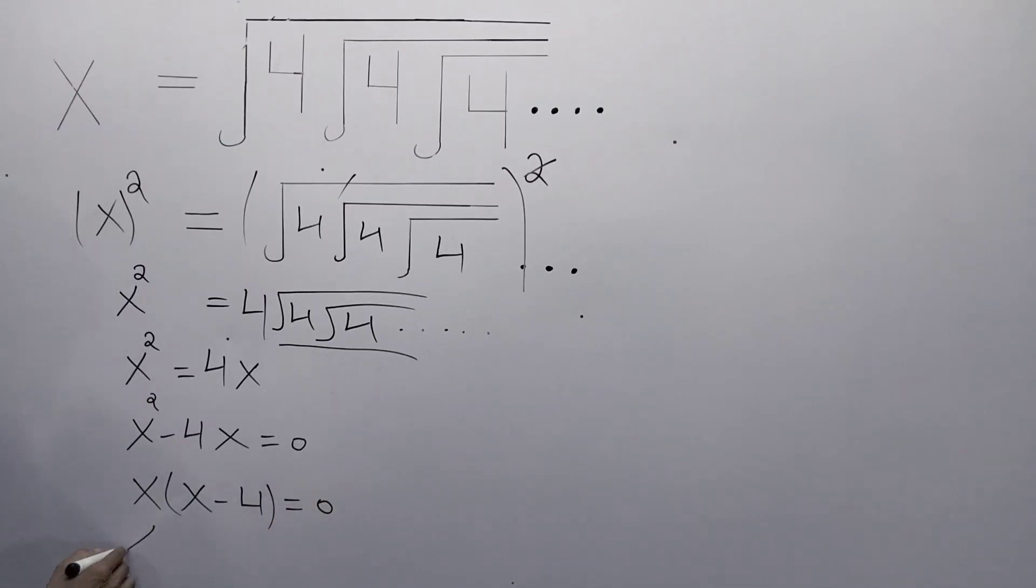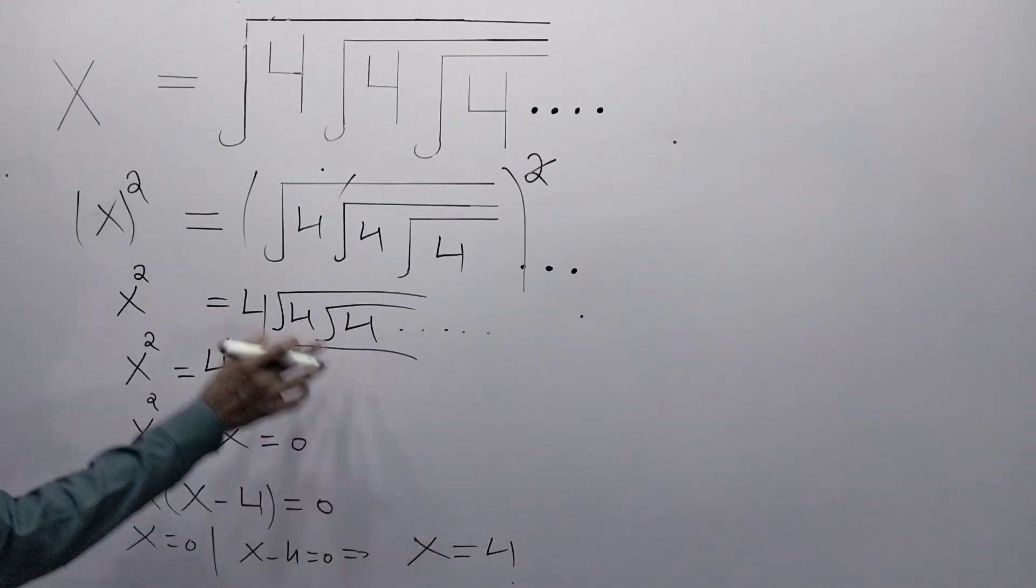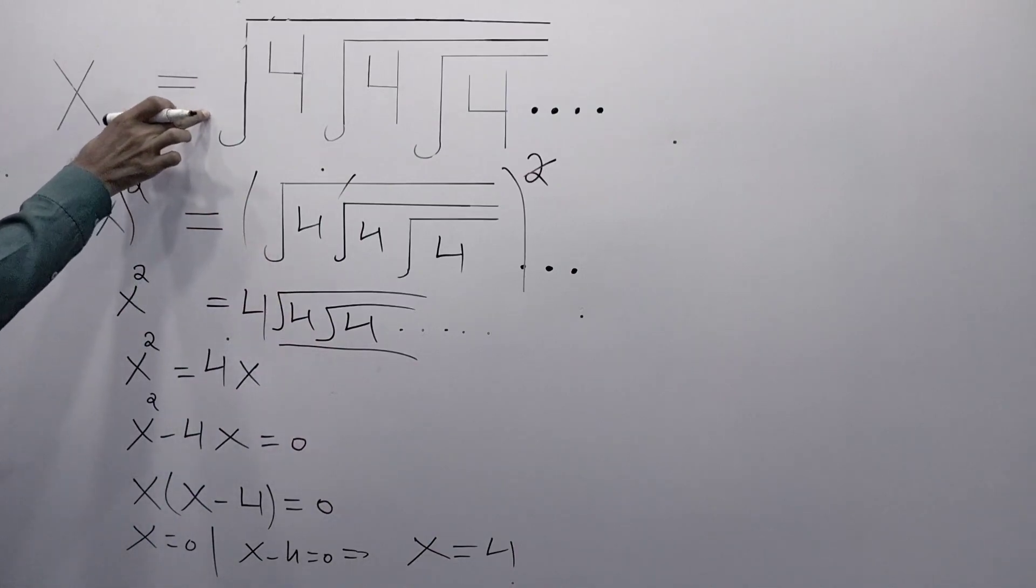Now x equals 0, or x minus 4 equals 0. Therefore, 0 and 4 are the solutions of this equation.